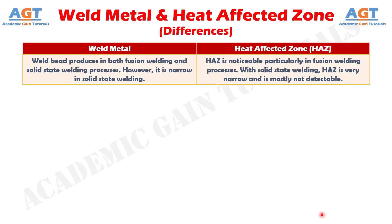Number 7: Weld Bead or Weld Metal is produced in both Fusion Welding and Solid State Welding processes; however, it is narrow in Solid State Welding. Heat Affected Zone is noticeable particularly in Fusion Welding processes. With Solid State Welding, Heat Affected Zone is very narrow and is mostly not detectable.